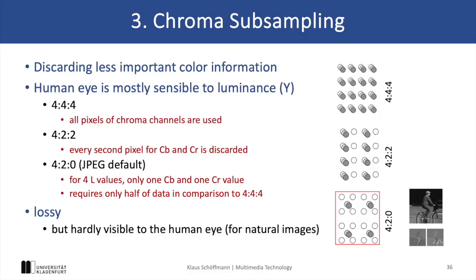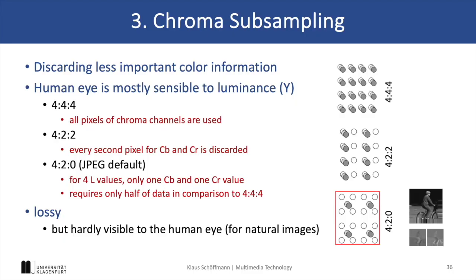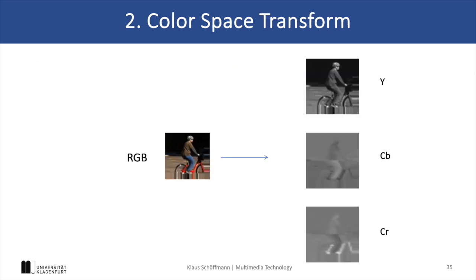There is also a 4:1:1 subsampling scheme, which means that chrominance is sampled only for every fourth pixel horizontally in every row, while 4:2:0 means that the chrominance subsampling is done both horizontally and vertically. At the decoder the color values are reconstructed by copying from the sampled value, but since the human eye is less sensitive to color changes we typically do not notice this missing color change from one pixel to another. You can also verify this as Cb and Cr have very low frequency, meaning that there are not a lot of value changes in small regions.